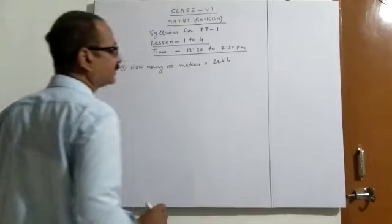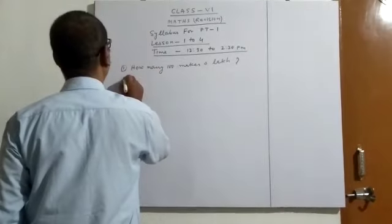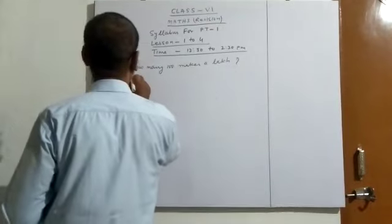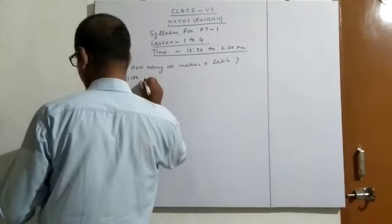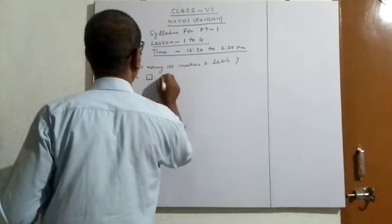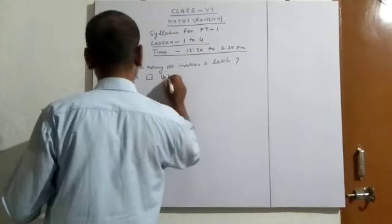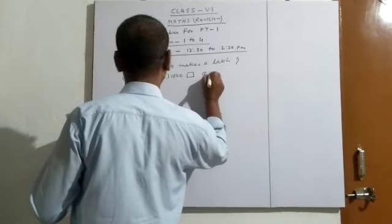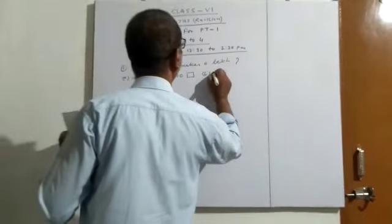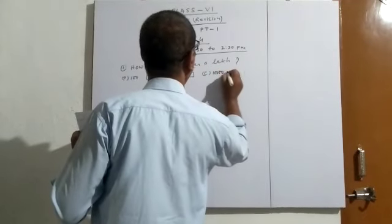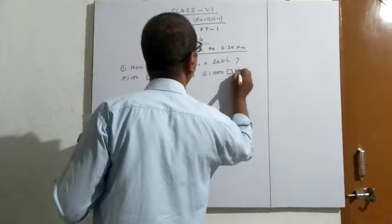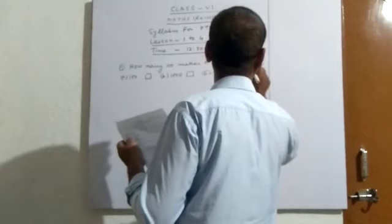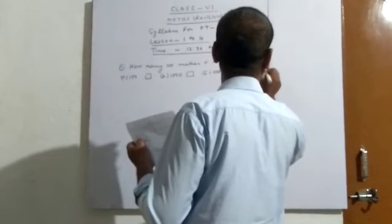Now see, this one is option A. The sum of the number is 100. B, this one is box B, you have 1000. This is box C, it is 10,000. And box D, it is 1 lakh.